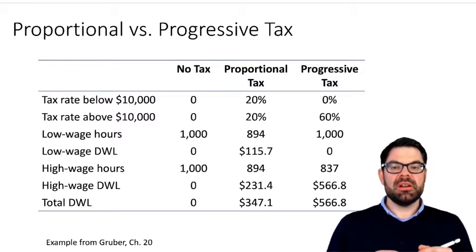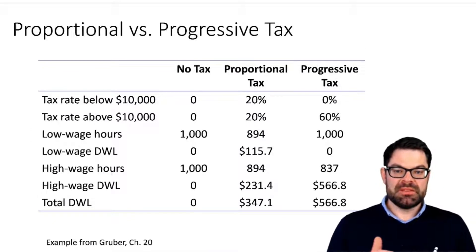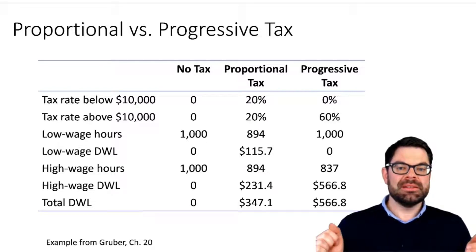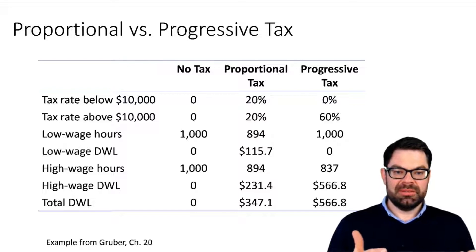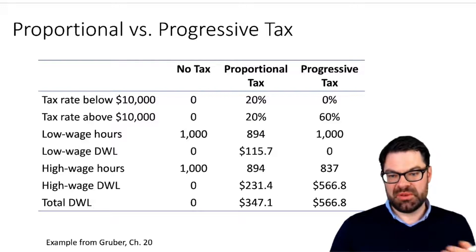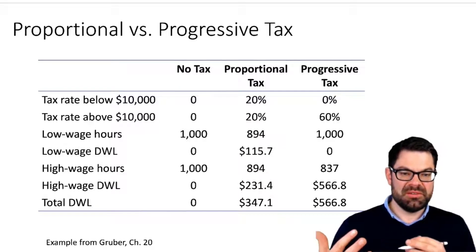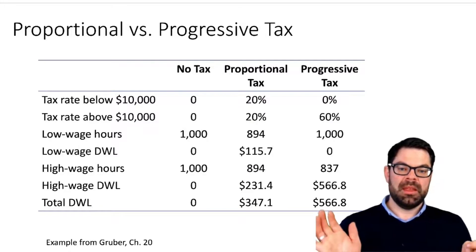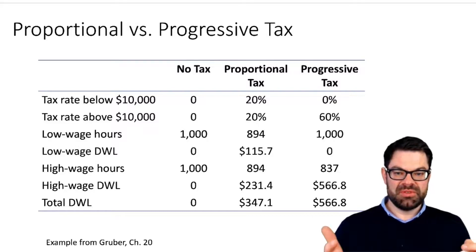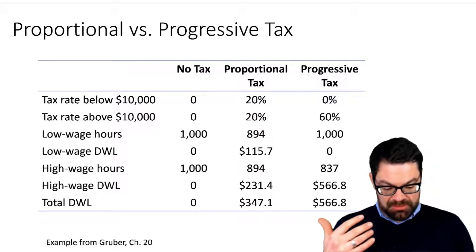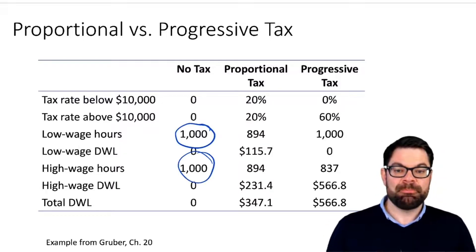Let's start with this numerical example. People have in total a thousand hours they can spend on either leisure or work or both, and they earn however many hours they work multiplied by their wage rate — $20 an hour for the high wage earner, $10 an hour for the low wage earner. With no tax, no one has an incentive to reduce their work hours, so work hours are a thousand each per year.